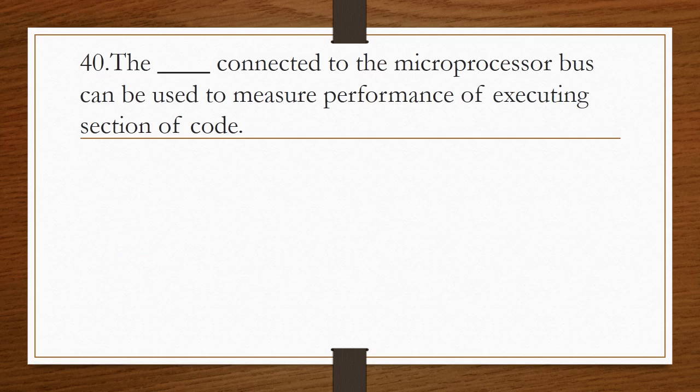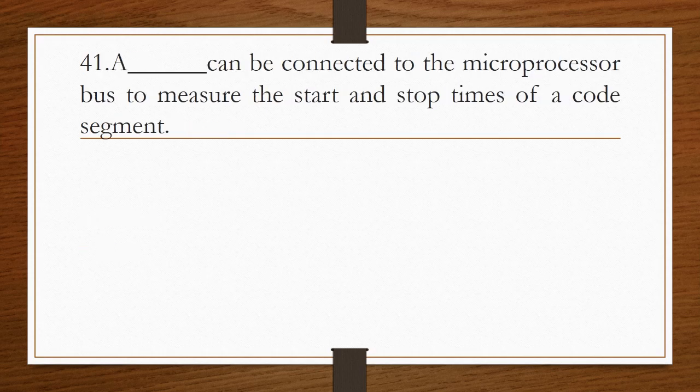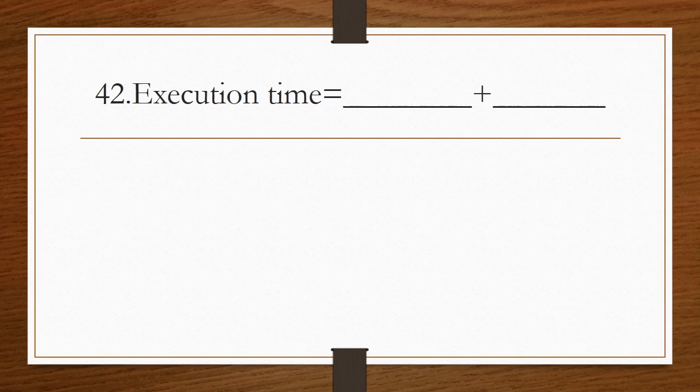The blank connected to the microprocessor bus can be used to measure the performance of executing sections of code. Answer is timer. A blank can be connected to the microprocessor bus to measure the start and stop times of code. Answer is logic analyzer. Execution time equals program path plus instruction timing. This is the formula used for calculating execution time.